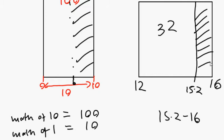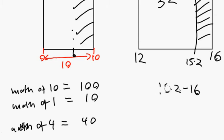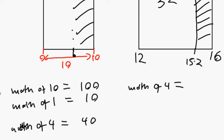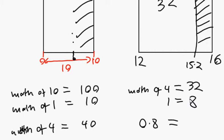A width of four represents 32 people. The width from fifteen point two to sixteen is point eight. If we divide by four, we find a width of one represents eight people. A width of point eight is going to be a smaller number than eight. Multiply eight by point eight and you get roughly 6.4 people.